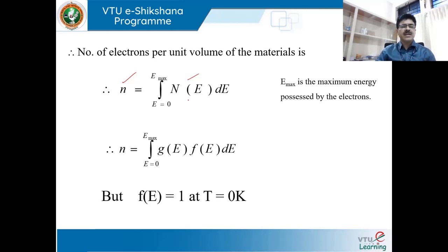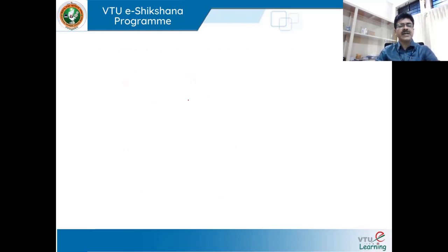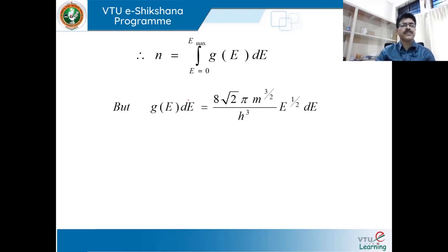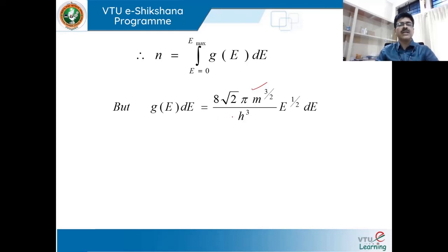At absolute 0 Kelvin, the probability F(E) is equal to 1, meaning all electrons below the Fermi level are occupied. Therefore F(E) = 1, and the equation becomes N = ∫G(E)dE from E = 0 to E_max. We already know that G(E)dE = 8√2·π·m^(3/2)/h³ × E^(1/2)·dE. Substituting this into the equation, I can write N = [8√2·π·m^(3/2)/h³] × ∫E^(1/2)dE from 0 to E_max, where the prefactor is a constant and E^(1/2) is the only variable.